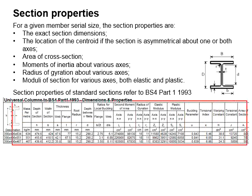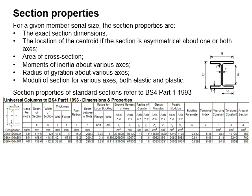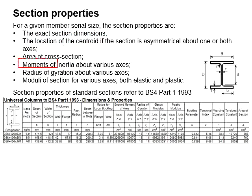These properties are essential for engineers designing structural steel. Some of the important properties include the dimensions of the sections, the location of the centroid, the cross-sectional area, the moment of inertia about the X and Y axes, the radius of gyration, and the section moduli.